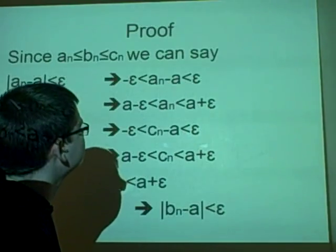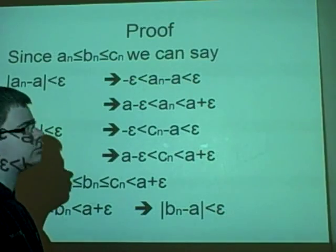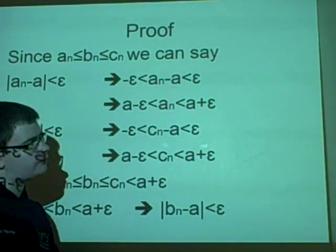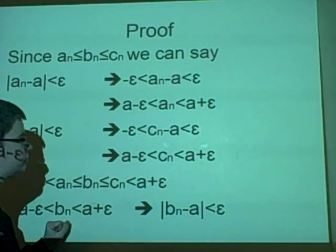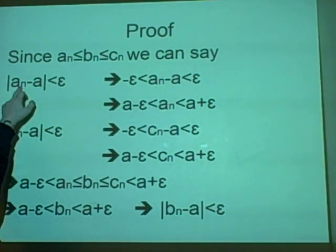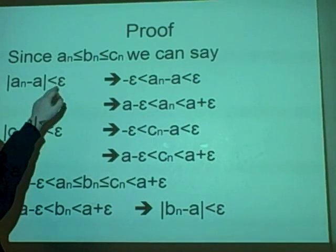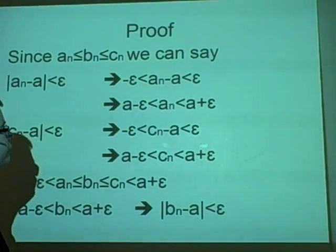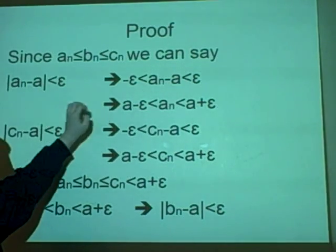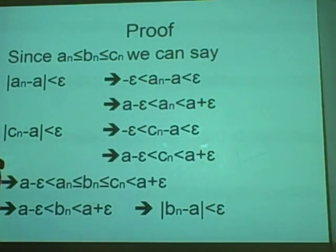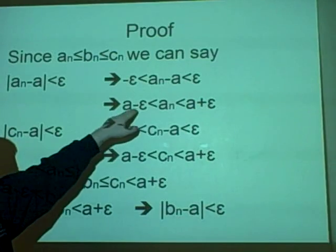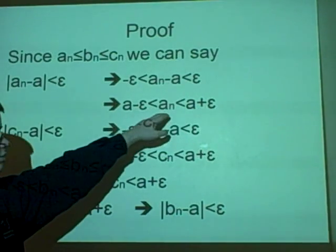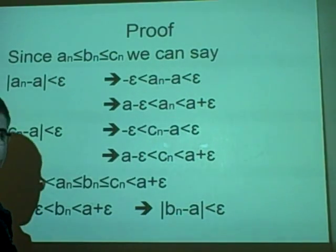Right, now here's the proof, because I figured sticking a few of these in might be useful. Since we have this, by the Convergence Theorem, we can say that |an - a| is less than epsilon. So if we get rid of the modulus, we can say this is true. Then we move the a out, so we get a minus epsilon less than an less than a plus epsilon.